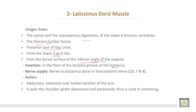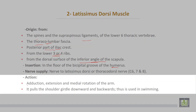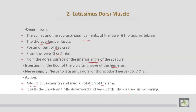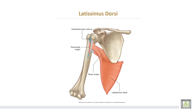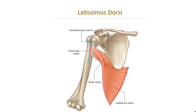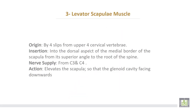The action of latissimus dorsi is adduction, extension, and medial rotation of the arm. It also pulls the shoulder girdle downwards and backwards, and is thus used in swimming. The origin and insertion of latissimus dorsi — inserting into the floor of the bicipital groove of the humerus — can be seen here.